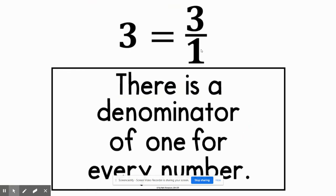Now, three can be written as three over one. There's a denominator of one for every number that's a whole number here. So that means that integers can also be considered rational numbers.